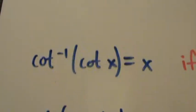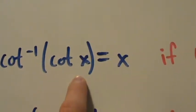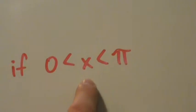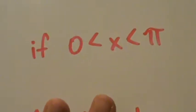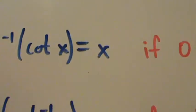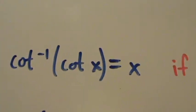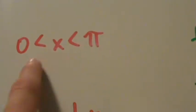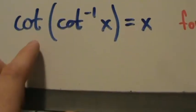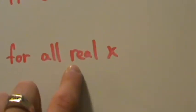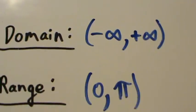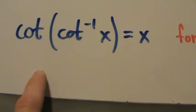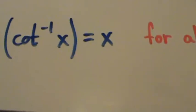Some cancellation properties: the inverse cotangent of the cotangent of x equals x, provided x is strictly between 0 and pi. If x is not between 0 and pi, as long as there are no domain violations, there's something else you can do, which we'll cover in a separate video. And cotangent of the inverse cotangent of x equals x for all real x — just like with the inverse tangent function. The reason is that the domain of the inverse cotangent function is all real numbers, so this cancellation property holds for all real x with no restrictions.